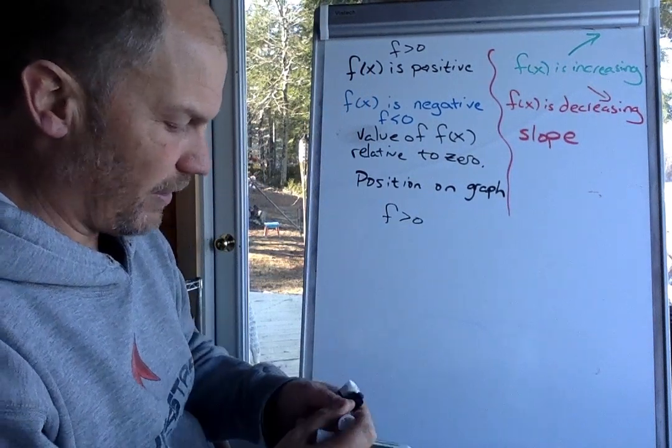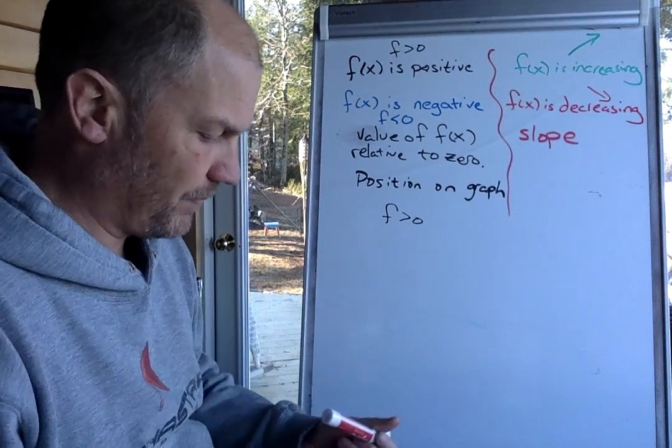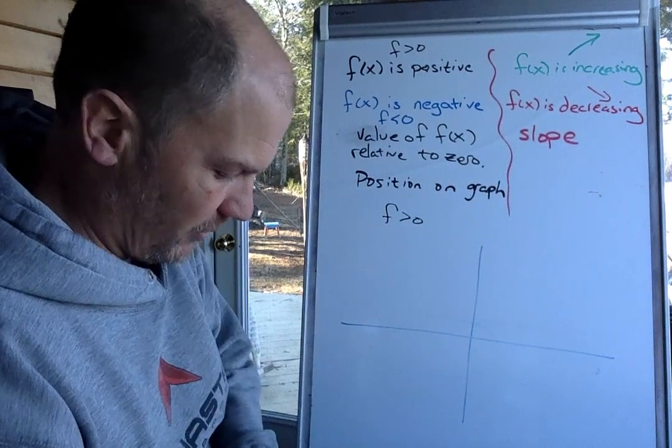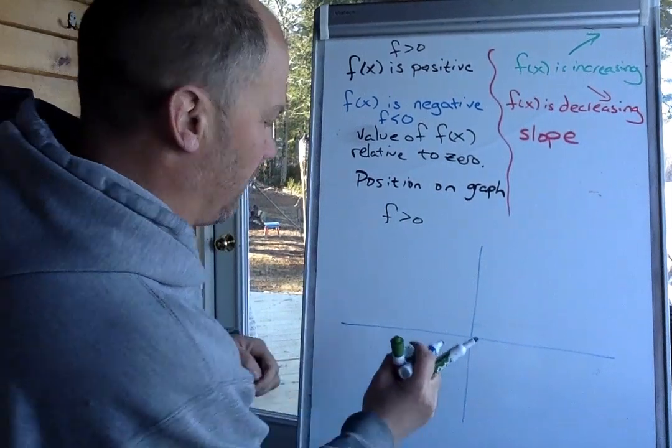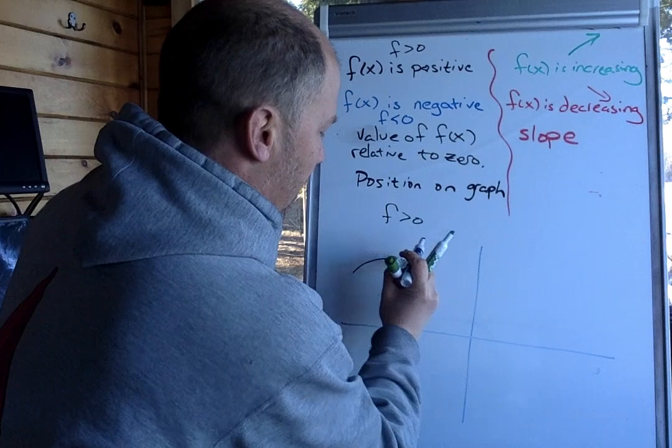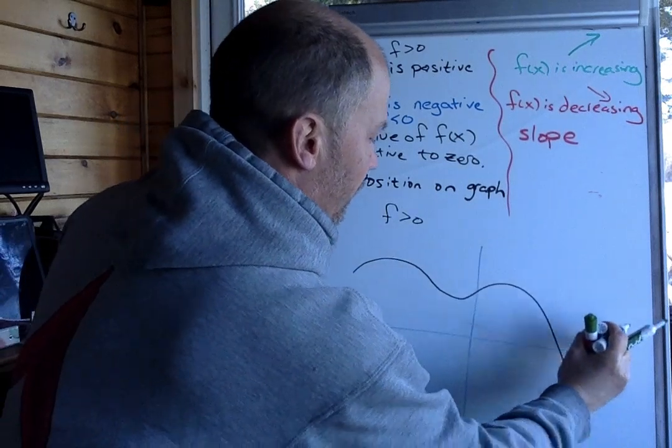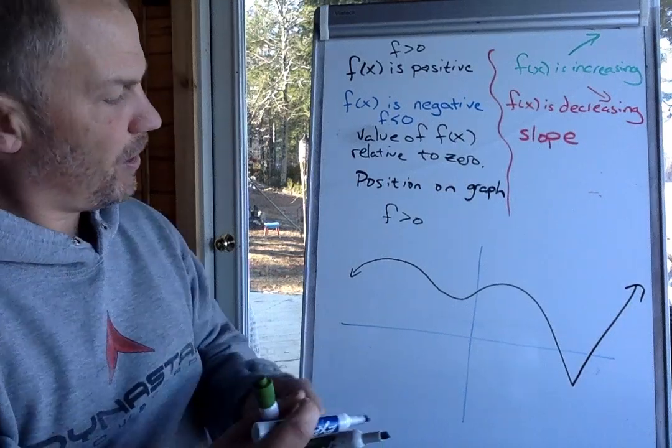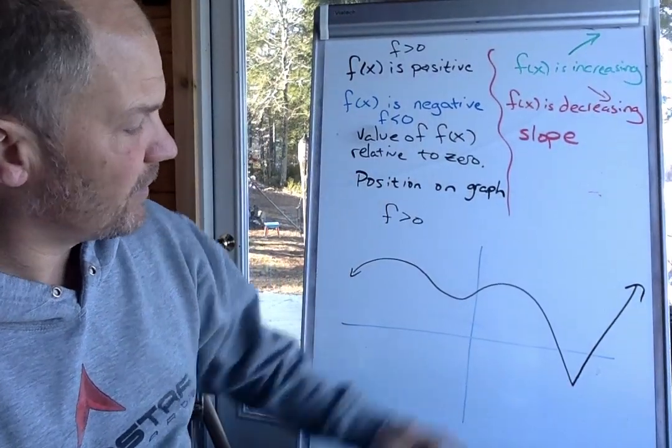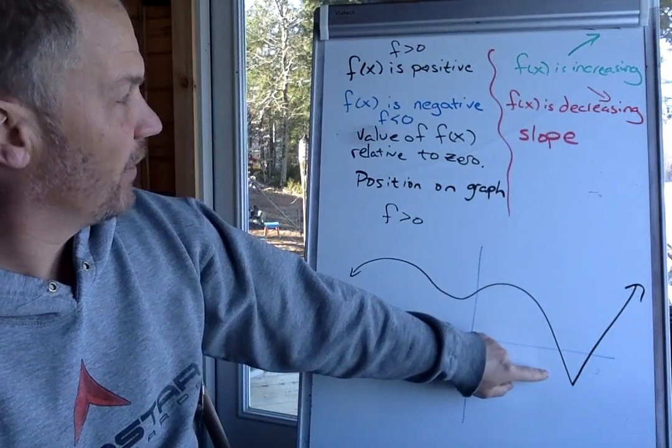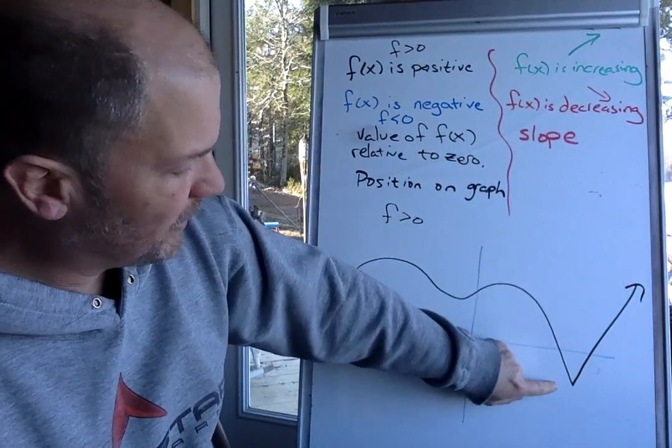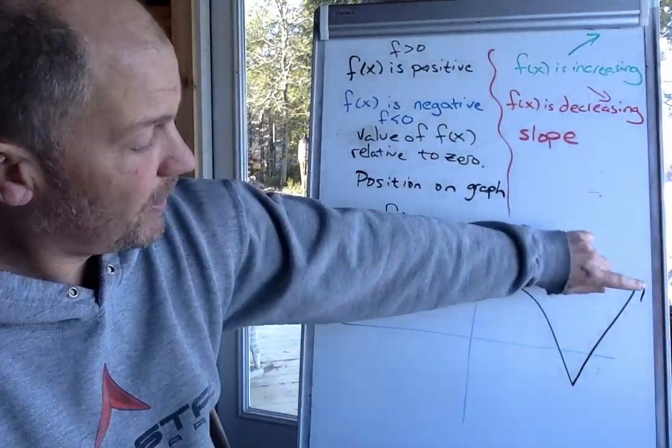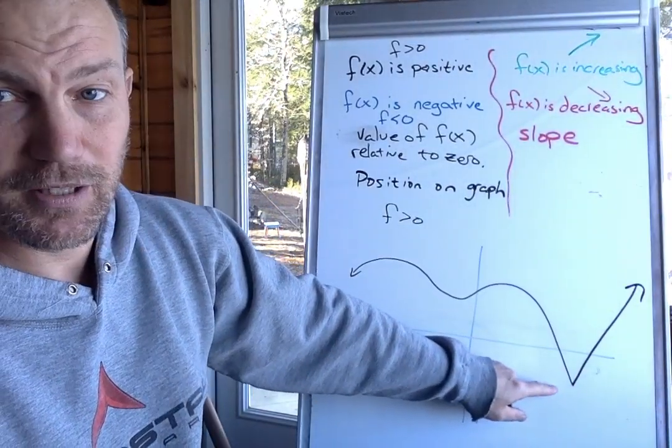So we should be able to look at a function, any function, and look at different regions on this function. I meant to do this in black, so let me grab my black marker. And if we have a function that does something like this, we should be able to go, oh, look, it's almost all greater than zero except for here. It's all positive and then it's a little negative and then it's positive again. So our function is positive, and then this little section, our function is negative.